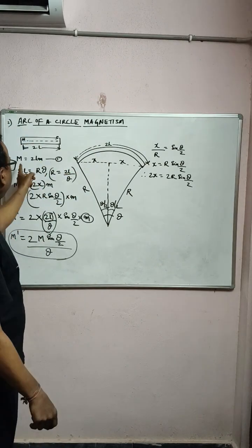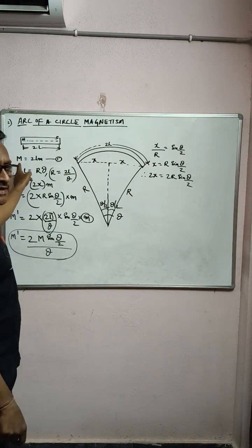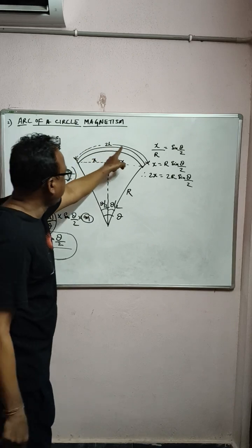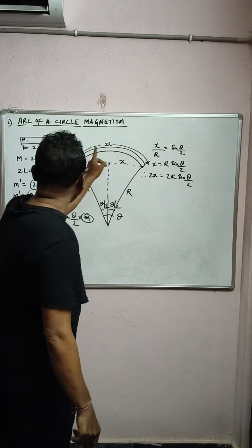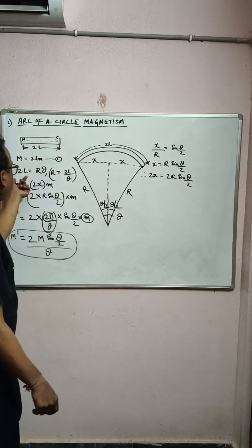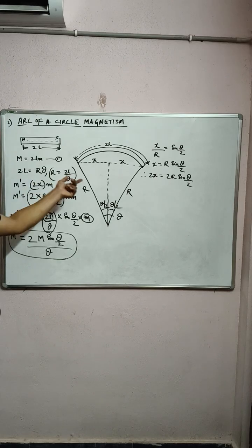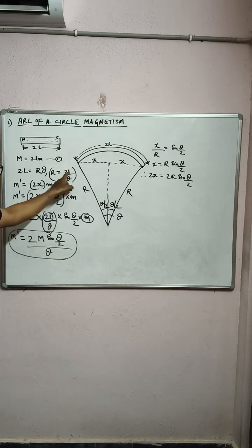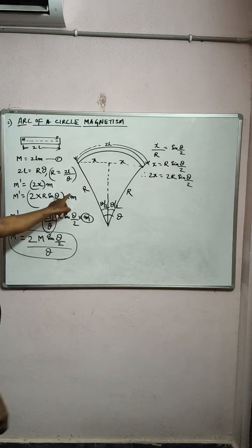Originally, the magnetic moment is 2lm. When it is bent into an arc of a circle, the arc length 2l becomes equal to rθ, and from that r is equal to 2l divided by θ.